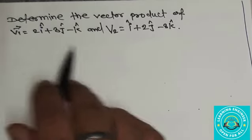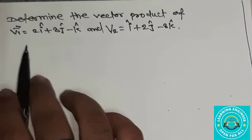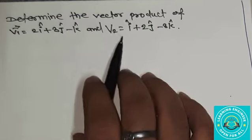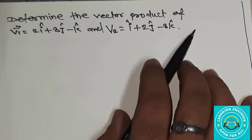Question is, determine the vector product of v1 is equal to 2i plus 3j minus k and v2 is equal to i plus 2j minus 3k.